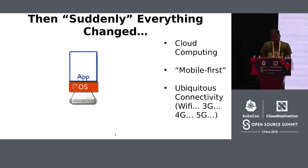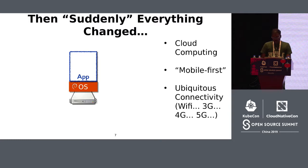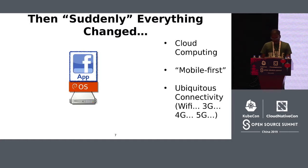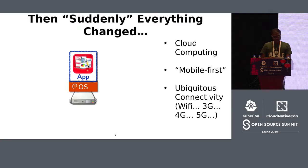But suddenly everything changed. Cloud computing happened. Everybody moved to smartphones and mobile-first strategies, with ubiquitous network connectivity and high-speed internet everywhere. So the type of applications changed. Suddenly we have social media applications like Twitter, Pinterest, and Facebook. In addition, some previously single-user applications also became collaborative multi-user applications.